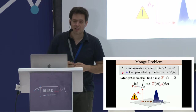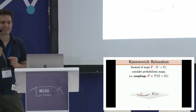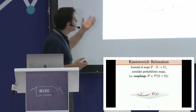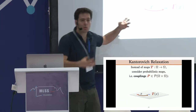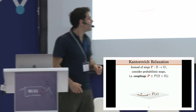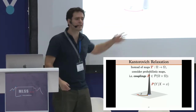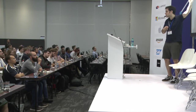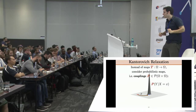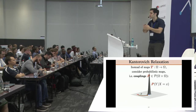This leads to Kantorovich's idea. The problem with the Monge map is that it considers deterministic maps: the worker goes to x and brings mass to t(x), with no choice. What if we allowed the worker to be a bit more flexible? You take the mass at x but I'm not asking you to take all of it — I'm asking you to distribute it somewhere following a probability distribution p(y|x=x). It's a probabilistic rather than deterministic approach.